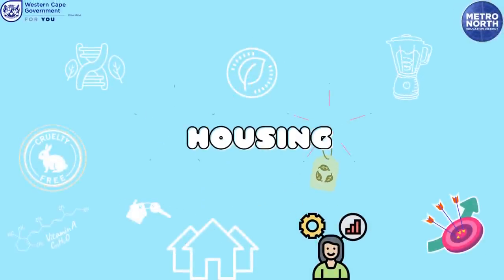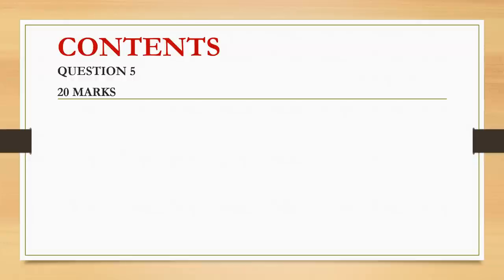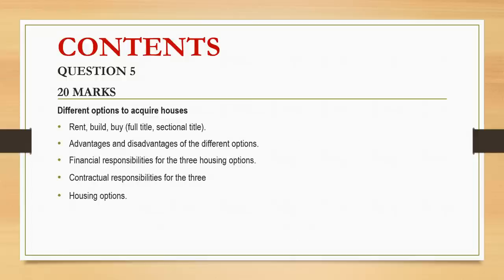The housing question is question 5 on your paper and it is 20 marks. It's quite a lot of information to study for a few marks, but some of it can also be asked in short questions. Topics include rent, build and buy; full title and sectional title ownership; advantages and disadvantages; financial responsibilities of the three options; contractual responsibilities; and housing options. Don't forget household appliances — the washing machine, fridge, freezer, stove and microwave — and only study the ones relevant to 2022.